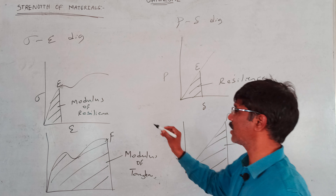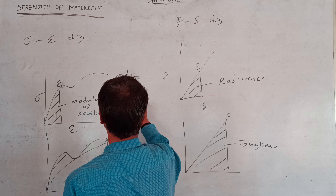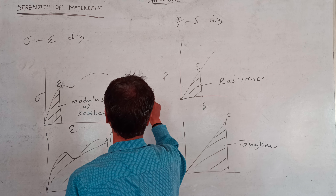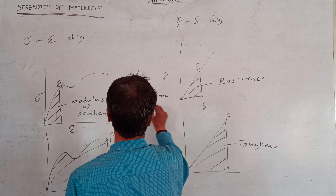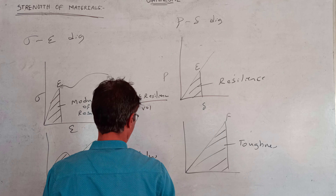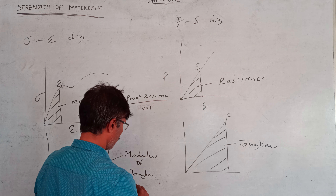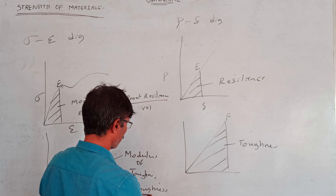Modulus of resilience is the proof resilience per unit volume. Modulus of toughness is toughness per unit volume.